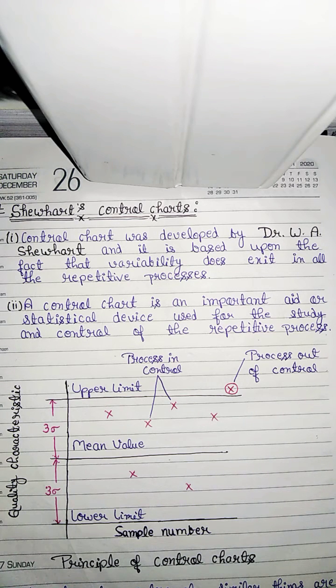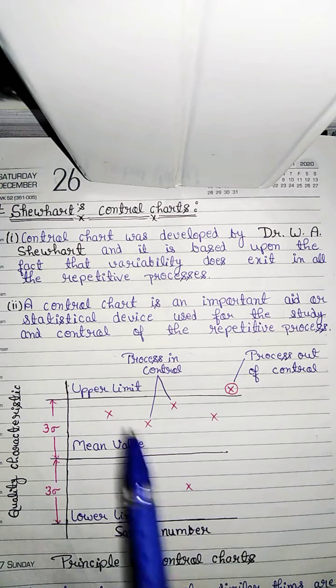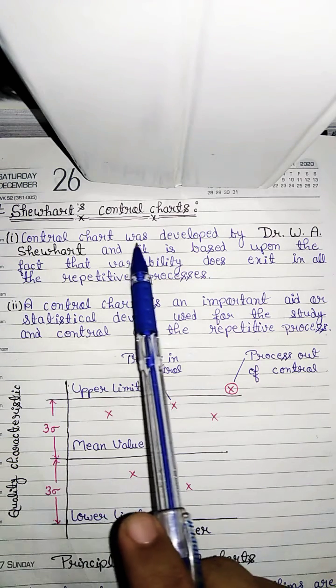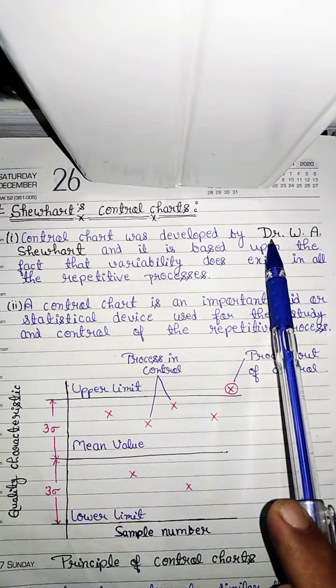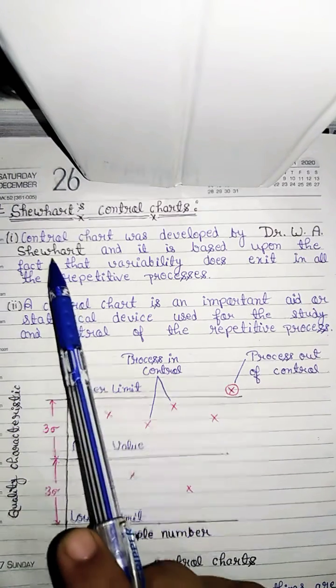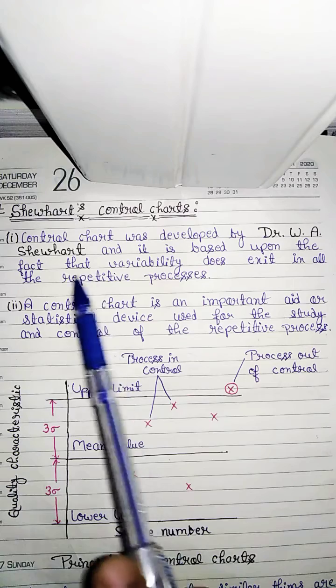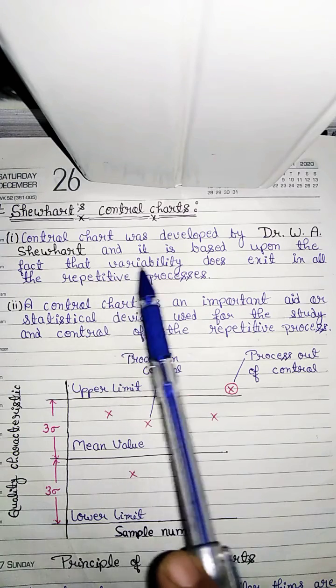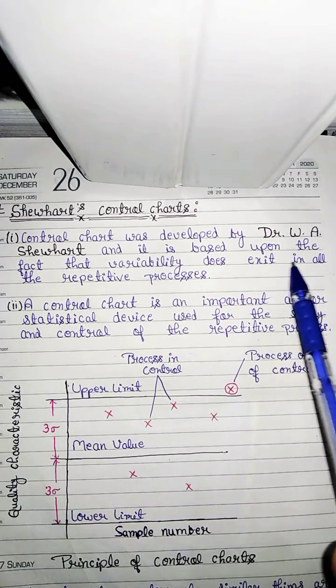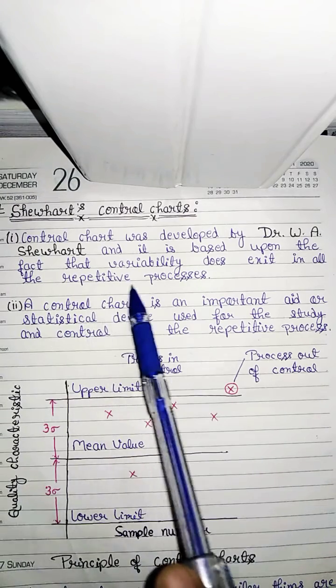The first point: control chart was developed by Dr. W.A. Shewhart and it is based upon the fact that variability does exist in all repetitive processes.